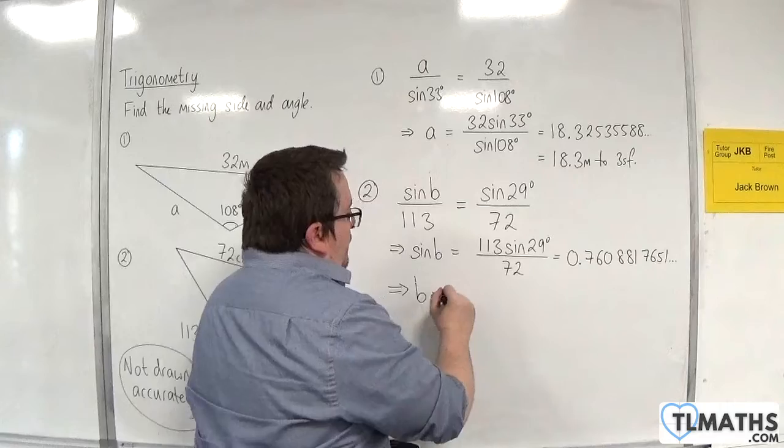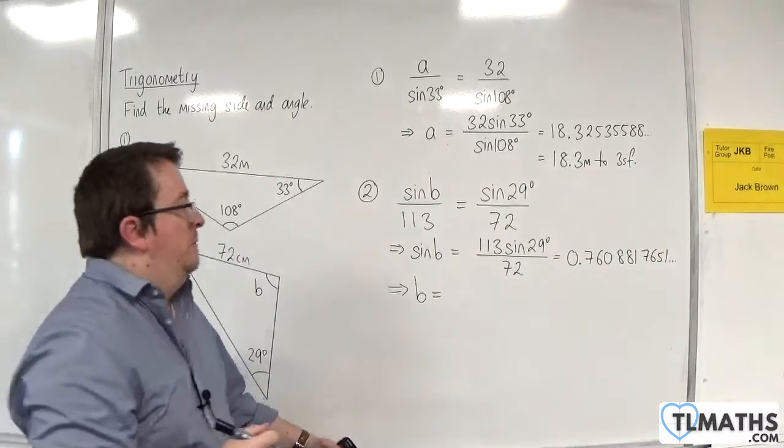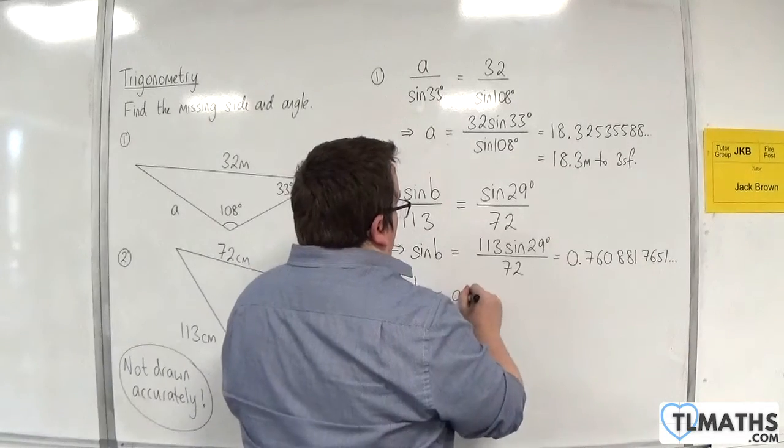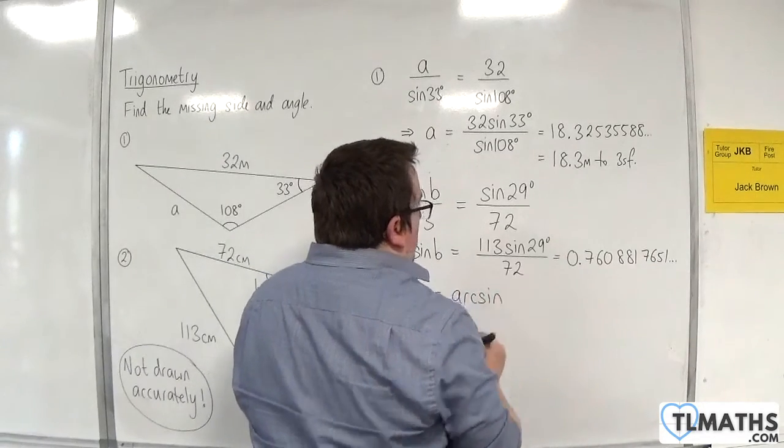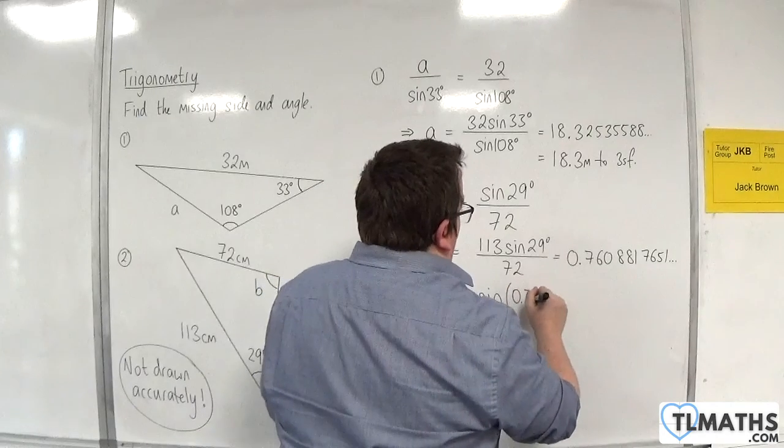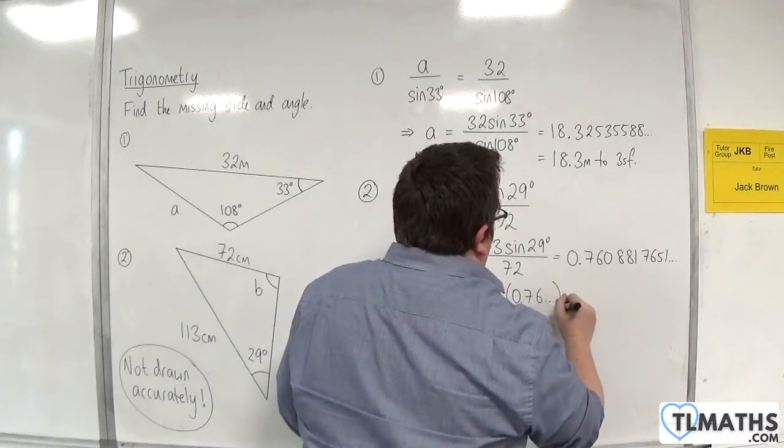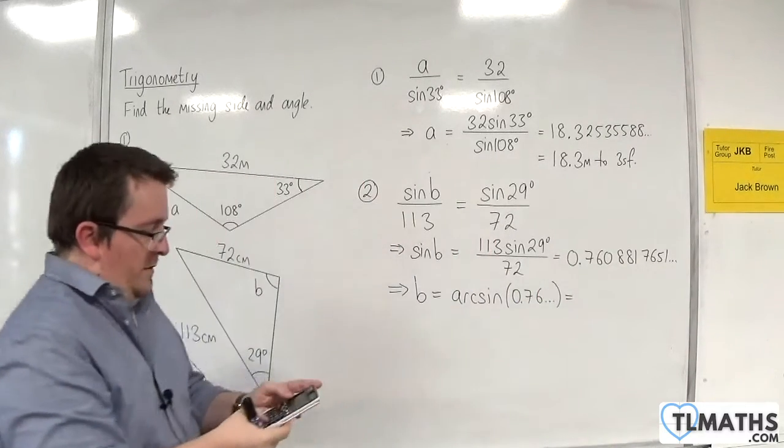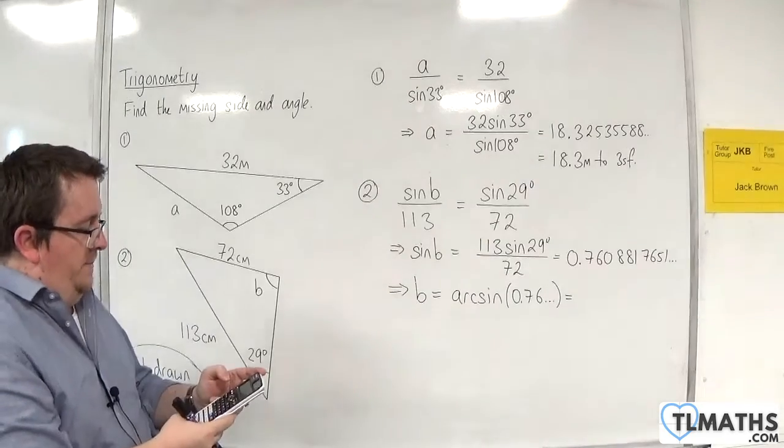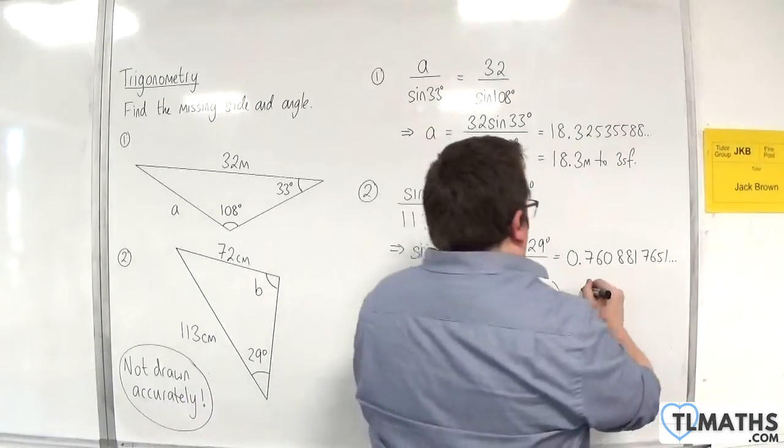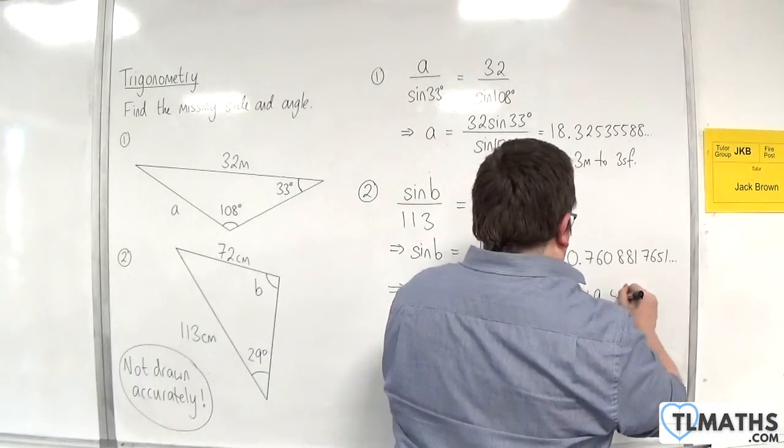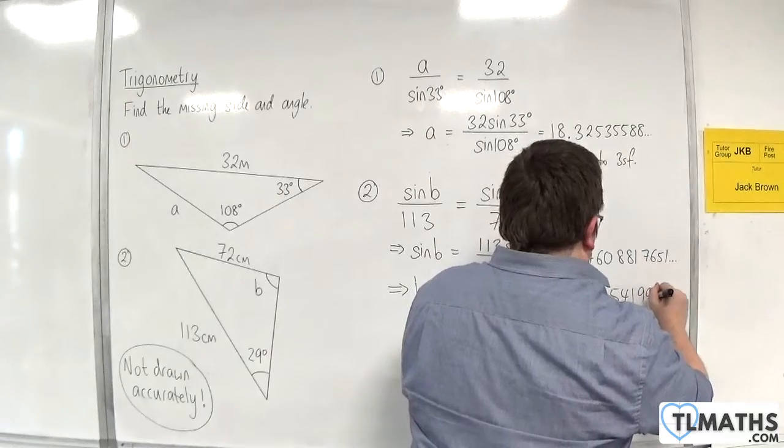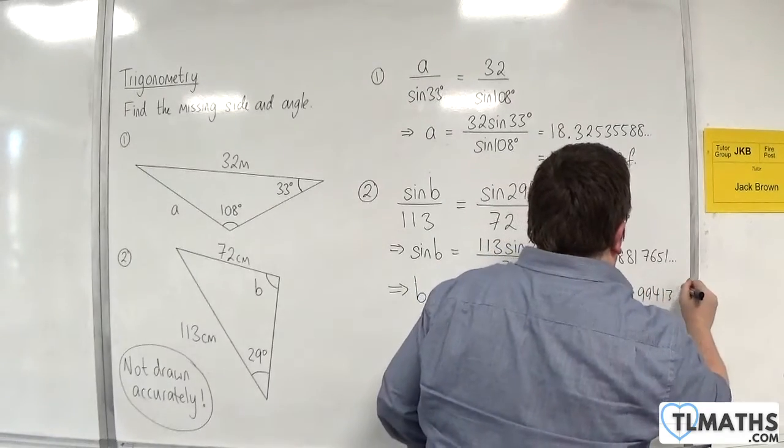Now I need to use the inverse sine, otherwise referred to as arcsine of 0.76. The inverse sine of that will be equal to 49.54199413 degrees.